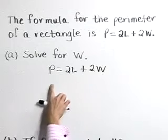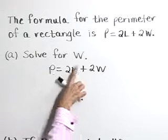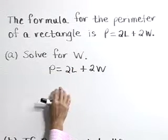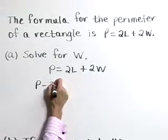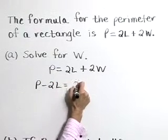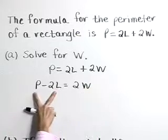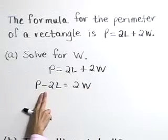So let's start by subtracting 2L from both sides, canceling it off the right, moving it to the left in the form of P minus 2L. These terms are not alike, so we can't combine them.